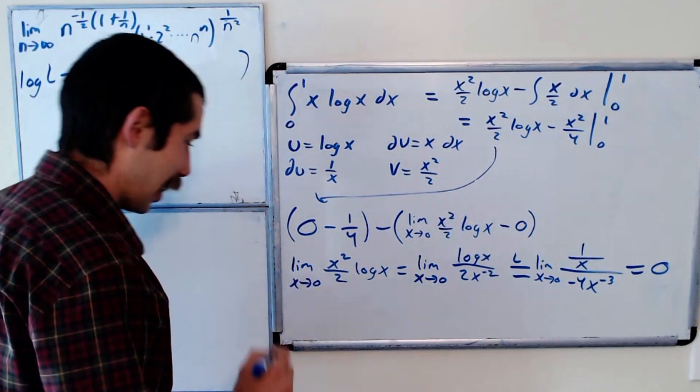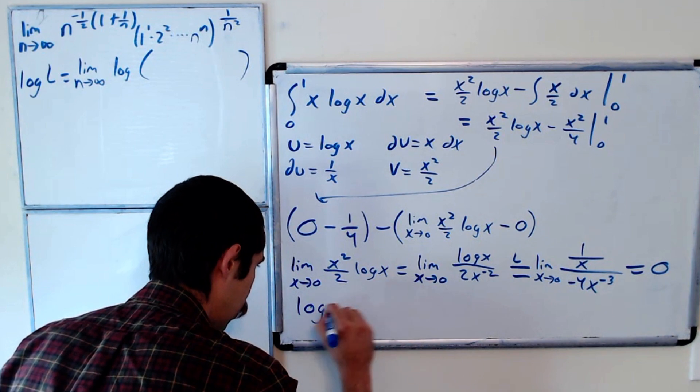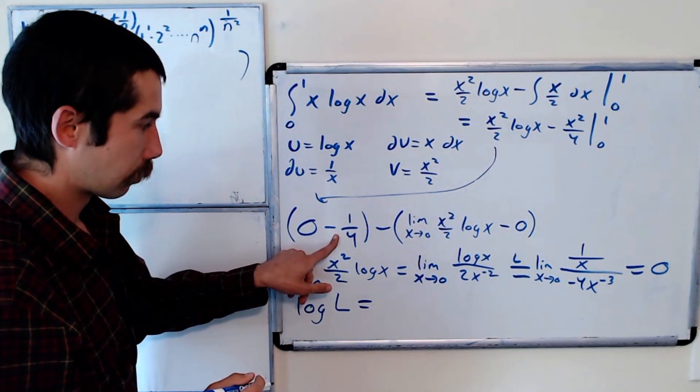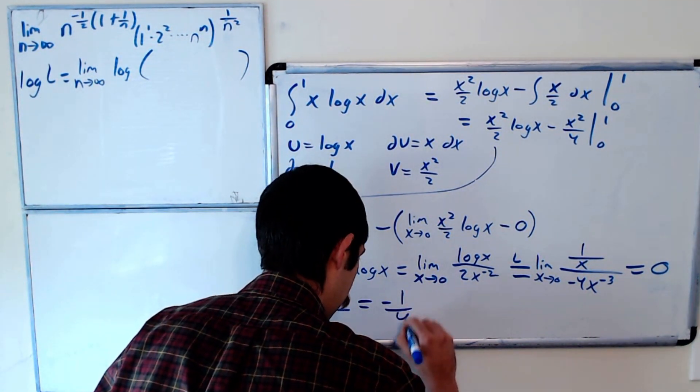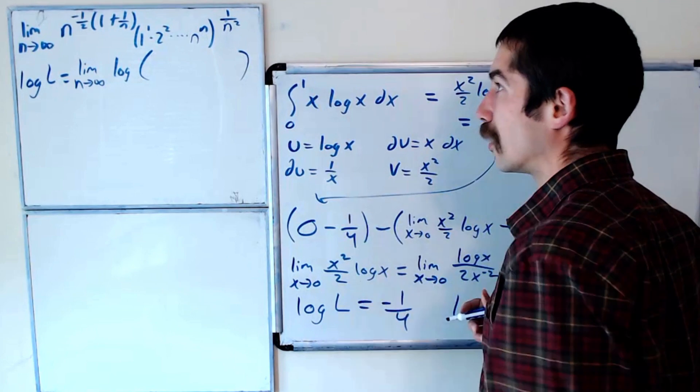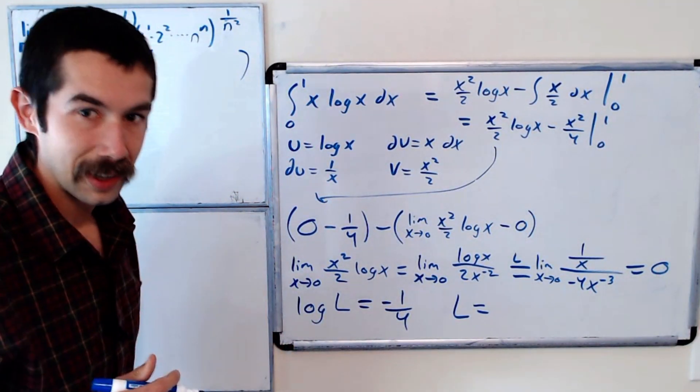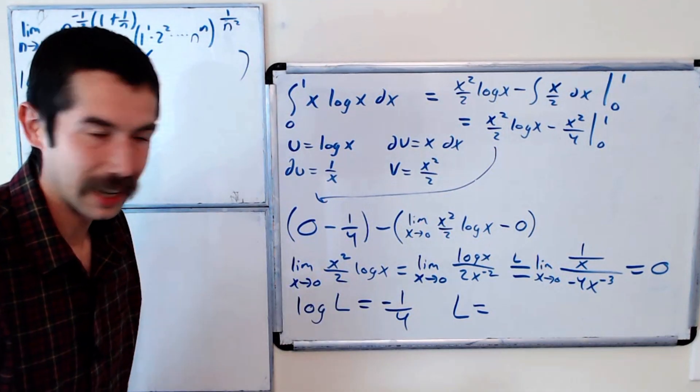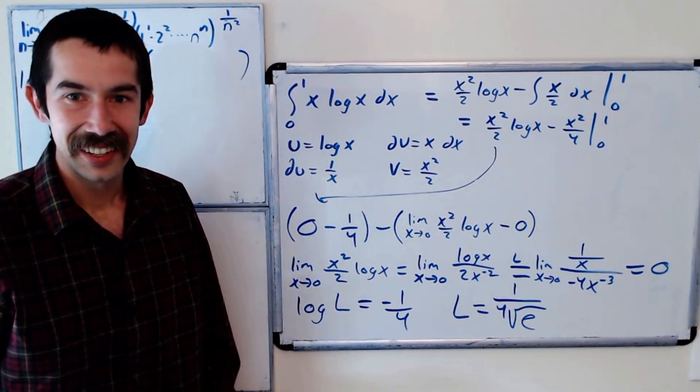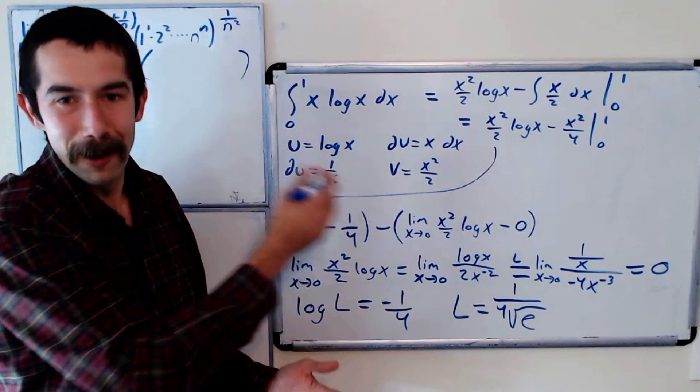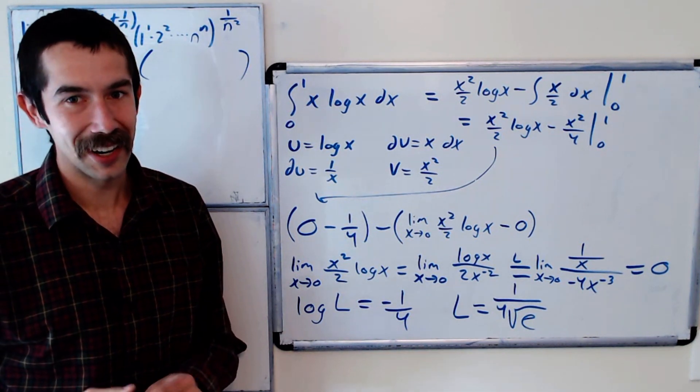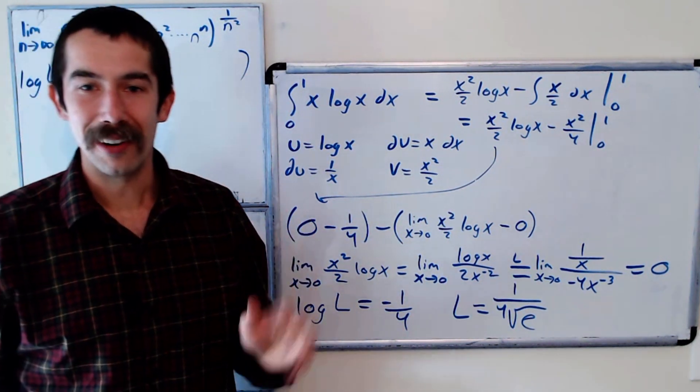Okay, and so what do we get? We get that the natural log of this limit is equal to just negative 1 fourth. And so the limit that we started with is equal to e to the negative 1 fourth. So that's 1 over the fourth root of e. Pretty tricky, but no one step was hard. It was just, there's a lot of steps. So let me know if you solved it. Be honest with me. All right, I'm sure some of you got it. You guys are smart. All right, see you later.